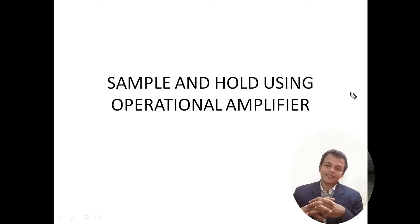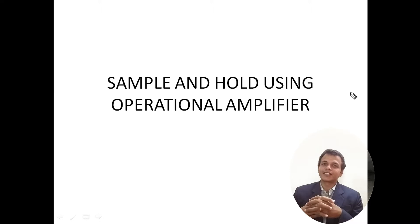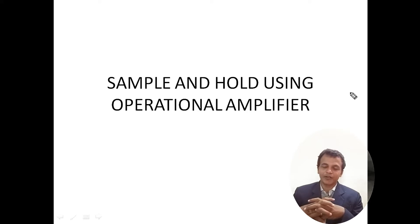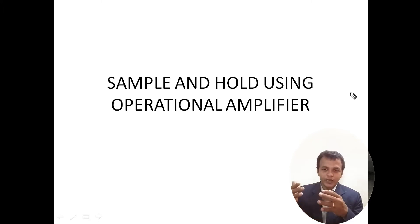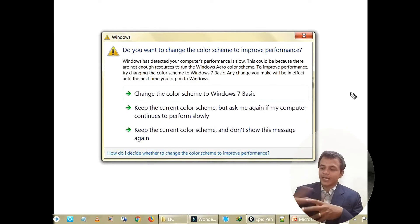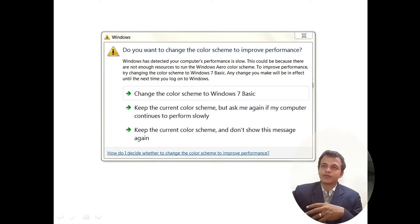So what is meant by sampling and holding? Sampling and holding operation is highly useful in the communication field. It is used to convert an analog signal into a digital signal. We have discussed converting an analog signal into a digital signal in another video available in the playlist on digital communication. Now let us focus on how to perform sampling and holding operation using operational amplifier. The sample and hold circuit performs two operations: one is sampling operation and another one is holding operation.